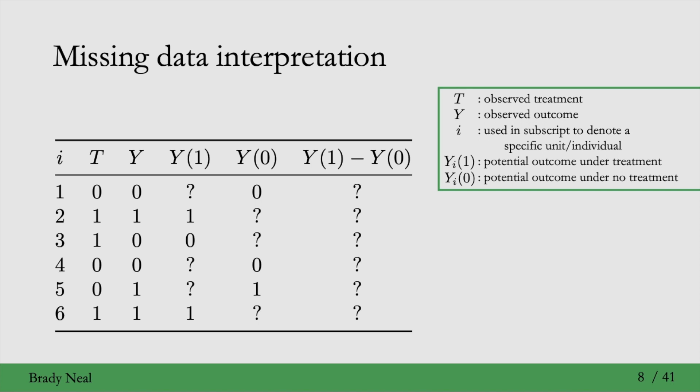Let's go through some of these rows now. The first row, I equals 1, treatment equals 0, and they observed an outcome of 0. So because treatment equals 0, they observed their Y(0) potential outcome, but they didn't observe their Y(1) potential outcome because treatment is 0, not 1. And because of that, they can't observe their unit-level causal effect.